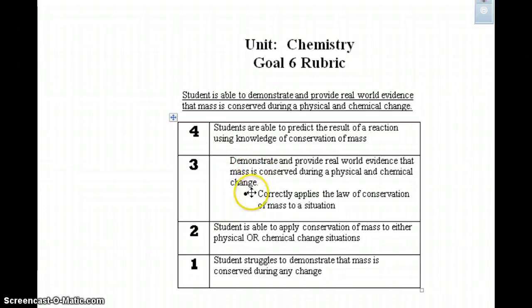In order to earn a 3 on this, you will need to demonstrate and provide real world evidence that mass is conserved during a physical and chemical change. You also need to be able to correctly apply the Law of Conservation of Mass to a situation. In order to earn a 4, you will need to be able to look at a chemical reaction and use your knowledge of conservation of mass to figure out what the product would be.